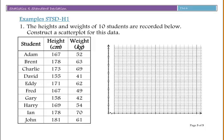Let's look at an example. The heights and weights of 10 students are recorded below. Construct a scatterplot for this data. For height and weight, you would expect that your weight would be dependent on your height. The taller you are, the more you weigh—think about a child versus an adult. So we're going to have height on our x-axis and weight on our y-axis.